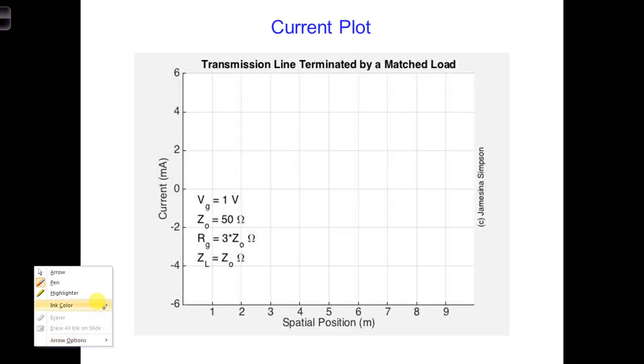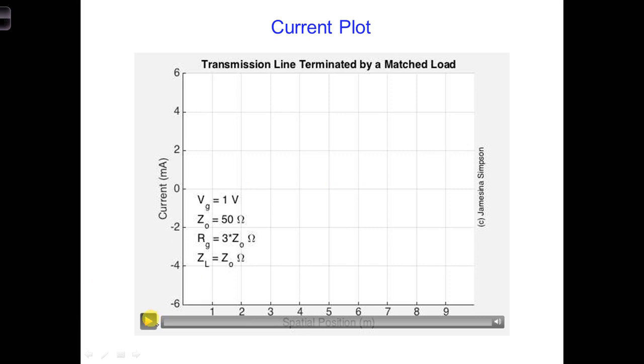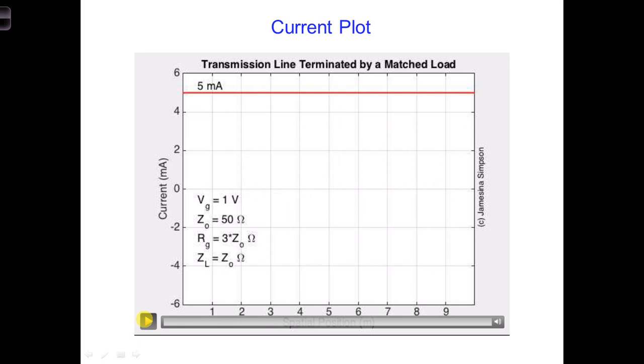And we can see that here in this video, which is for the current, 5 milliamps. This is also obtained from the computer code solving the telegrapher's equations.